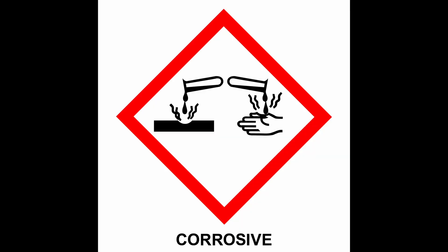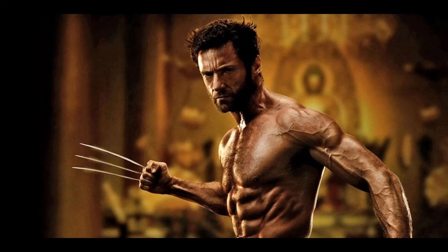Number five is a pictogram of two beakers showing burning and corrosion on both metal and skin. Because if a chemical can melt metal, it's also going to melt your skin and bone — unless of course you're X-Men's Wolverine, but you ain't no Wolverine. Number six is an exclamation mark that notes when serious eye damage could occur, or some type of skin, eye, or lung irritation. This may be one of the lesser dangers, but it's still a hazard nonetheless.